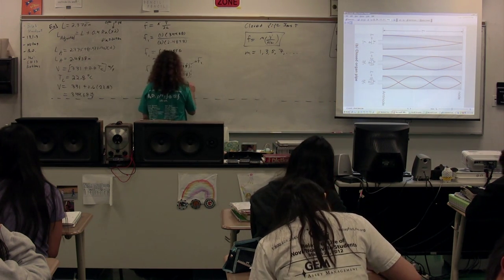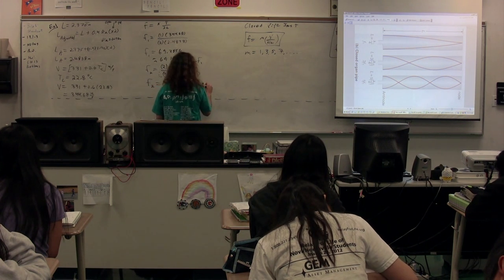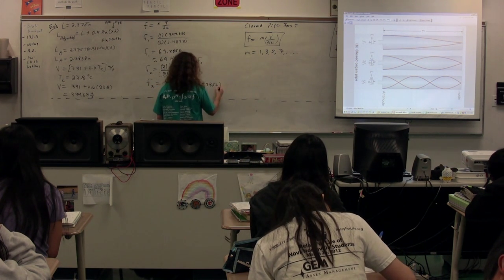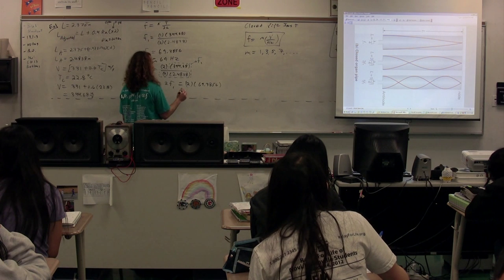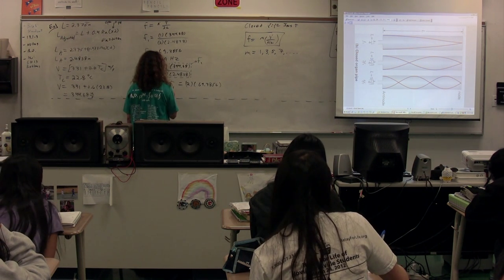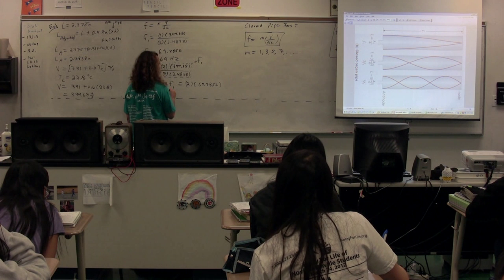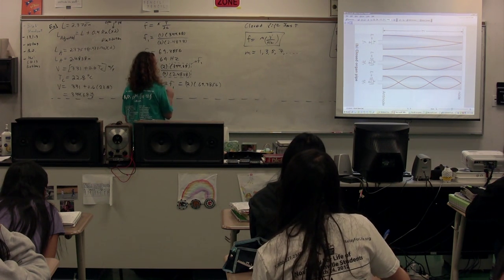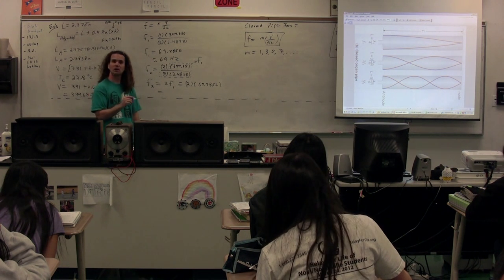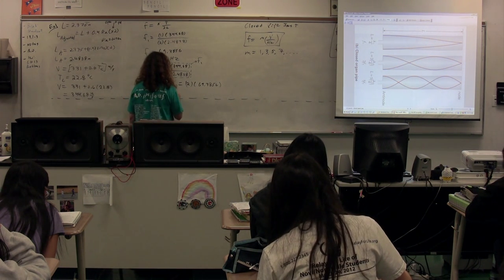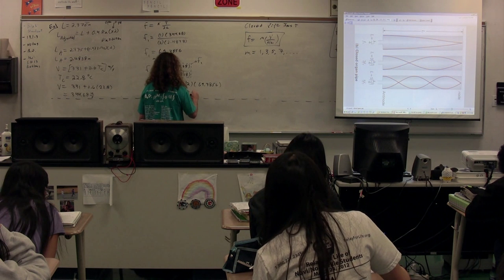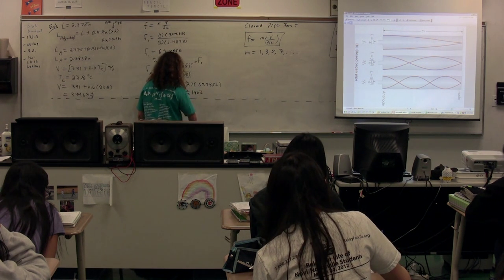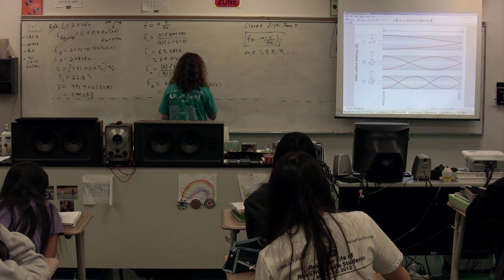So we just take 2 and multiply it by our 69.3856. The frequency equals 138.77 hertz. We'll go with two sig figs, approximately 140 hertz. This is the second harmonic.